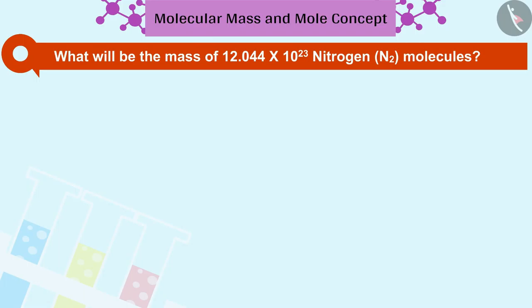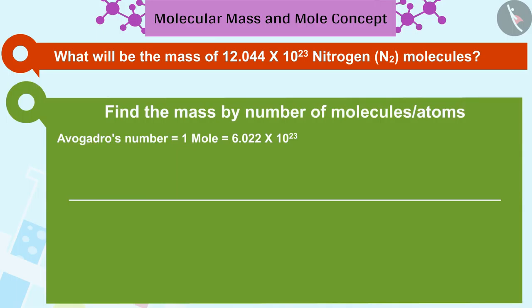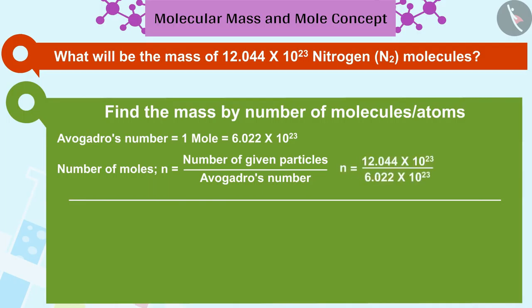To find this, first we will get the number of moles from the number of given particles. 12.044 into 10 raised to 23 nitrogen N2 molecules is equal to 2 moles of nitrogen gas.